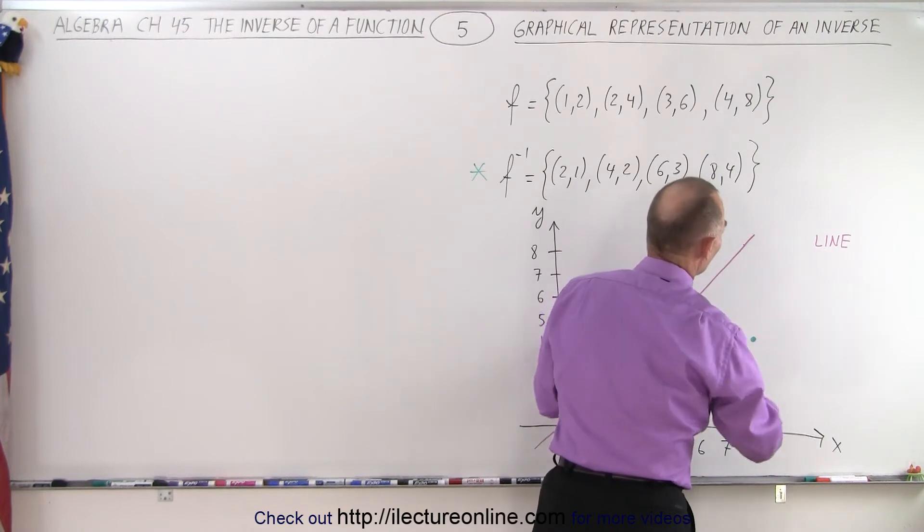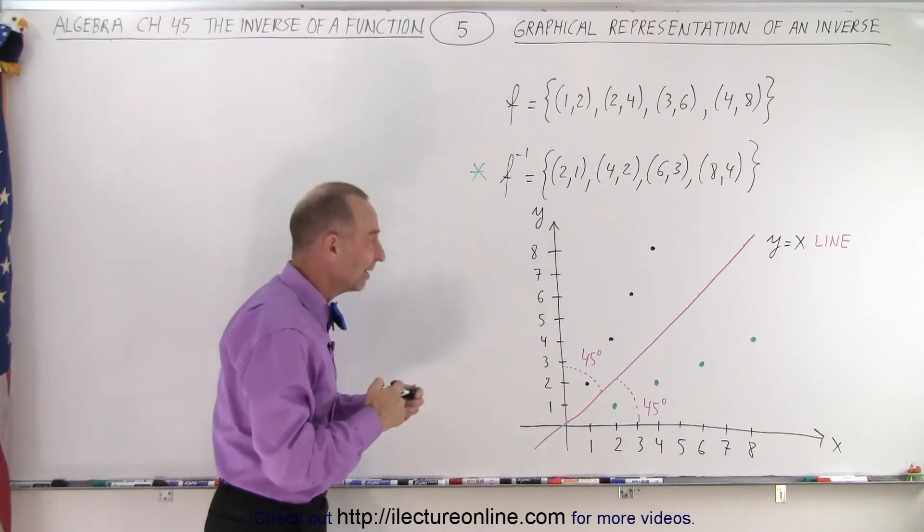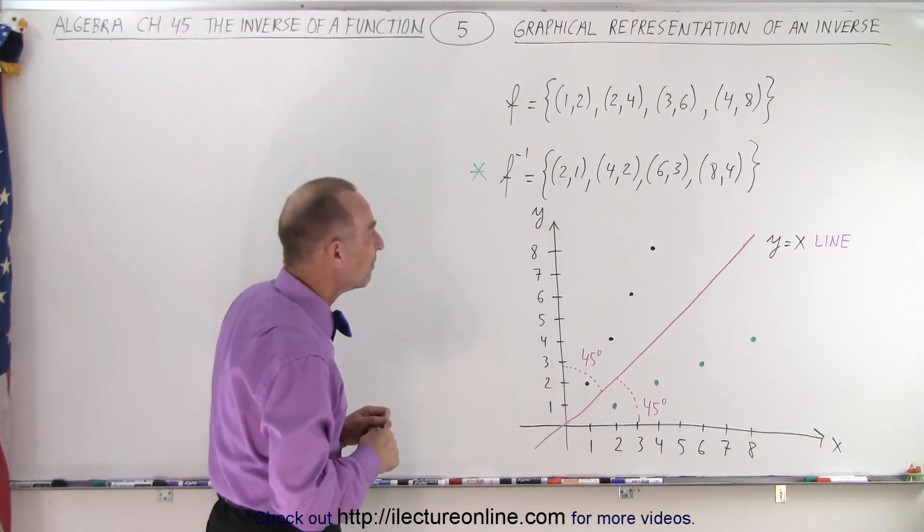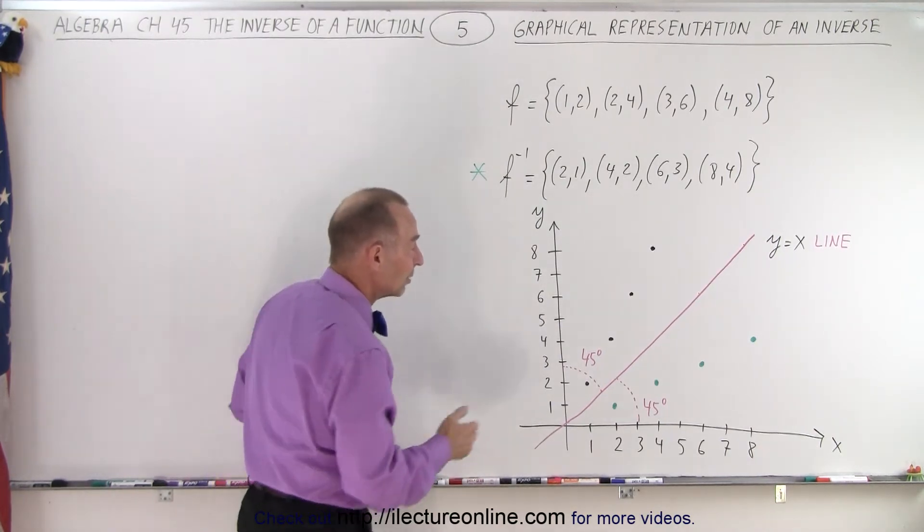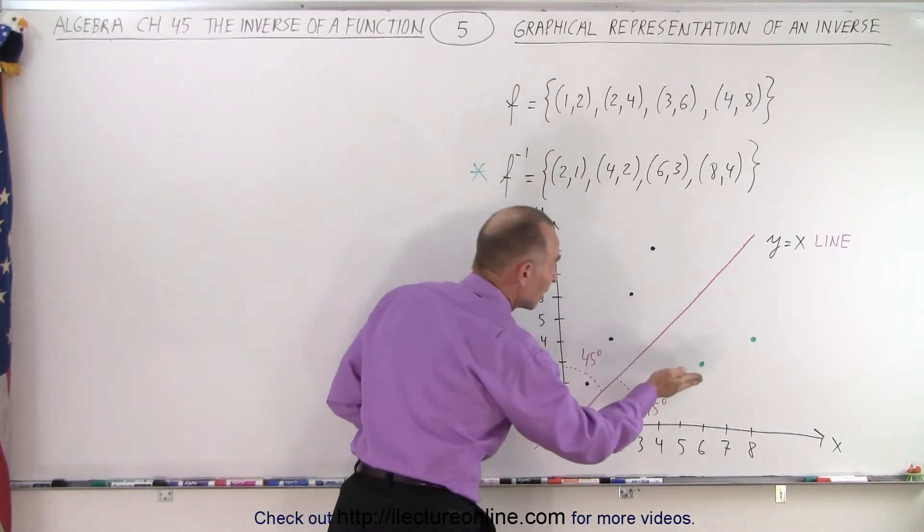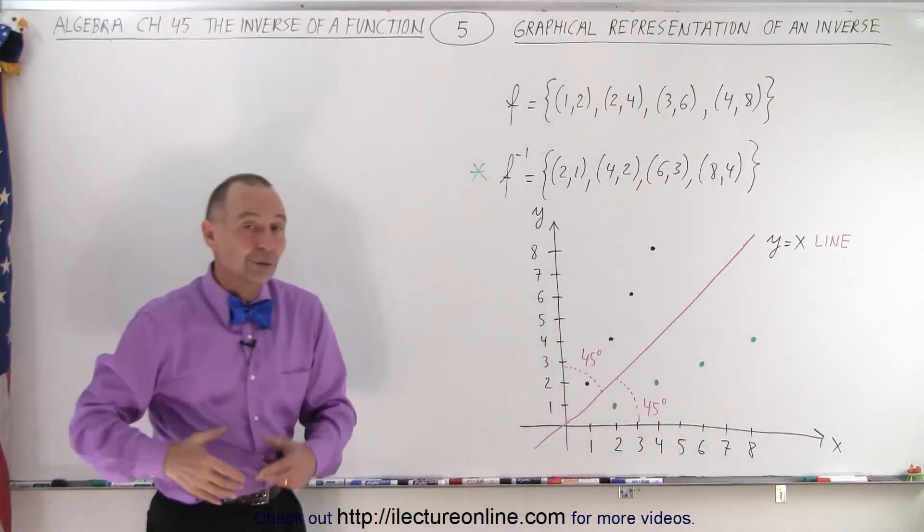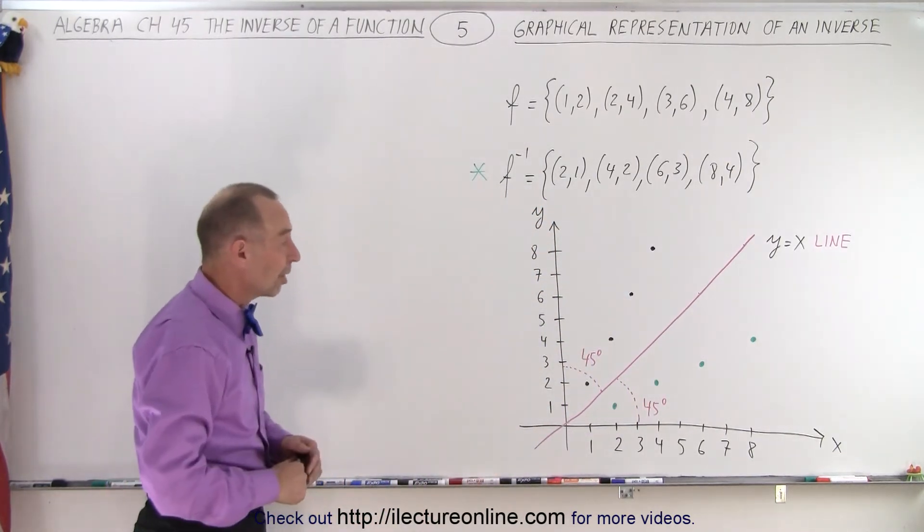I should write this as y equals x line. That's the more proper way of writing it, the more standard way of writing it, I should say. So anyway, what we're saying here is that the inverse of a function is simply the mirror image of the function about the y equals x line, or the 45 degree line, as we sometimes call it.